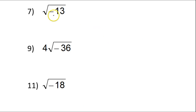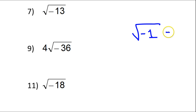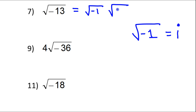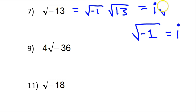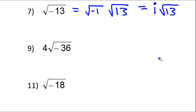This video is really about imaginary numbers. Imaginary numbers occur when you have the square root of negative 1. The square root of negative 1 is defined as being i, and that allows us to do a lot of problems we wouldn't be able to do normally. So when you see the square root of negative 13, what you have is the square root of negative 1 times the square root of 13. That's i, so that gives you i and then radical 13. And that's all you can do with that — that's the final answer.